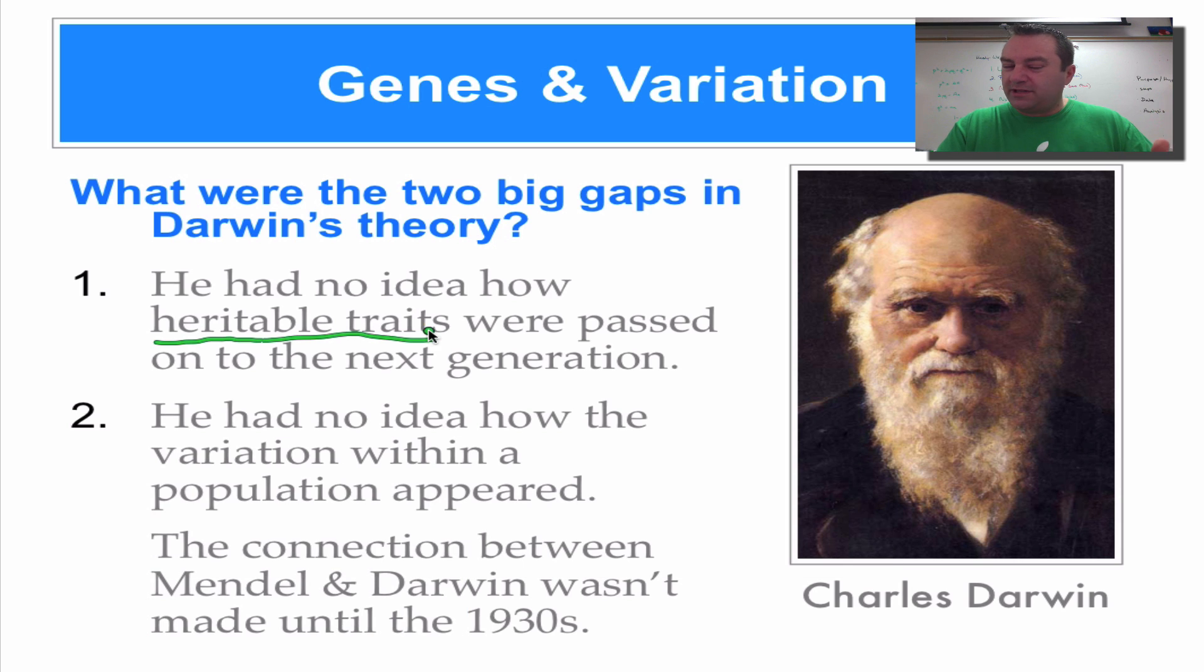Now, even though Mendel was sort of a contemporary of his, Mendel's work really wasn't discovered until after Darwin died, right around 1900 is when we found Mendel's work. And actually, Mendel's work was not connected to Charles Darwin until the 1930s. So you're talking 80 years ago is when science made the connection between Gregor Mendel's work on genes and alleles and Charles Darwin's theory of natural selection.